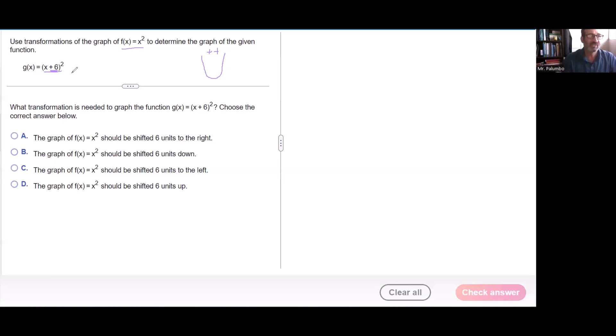And because it's a plus 6, it's actually going to the left. So for a, b, c, and d, we're going to say that we're shifting the graph six units to the left. That's c. Nice work.